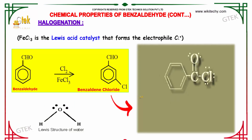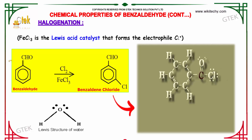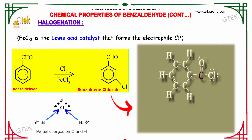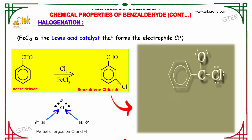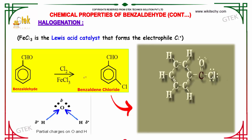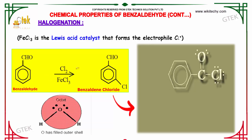Halogenation: Ferric chloride acts as the Lewis acid catalyst that forms the electrophile Cl+. When benzaldehyde is reacted with chlorine in the presence of ferric chloride, we obtain meta-chlorobenzaldehyde — an electrophilic substitution by the chlorine atom at the meta position of benzaldehyde.